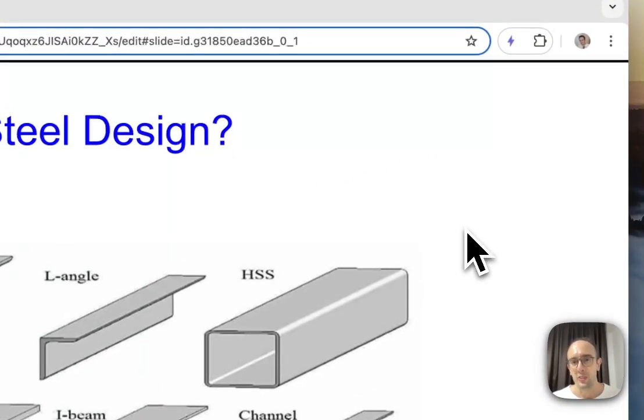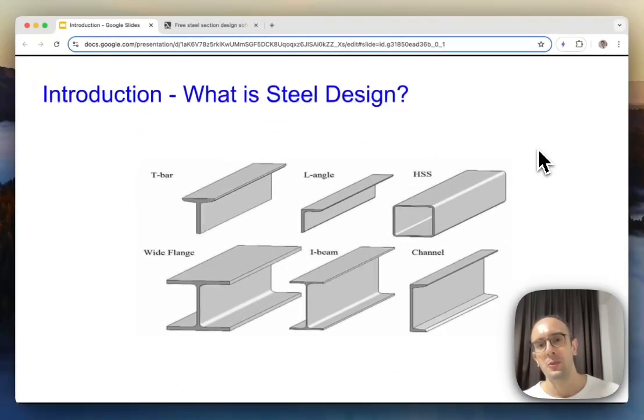So in terms of what is steel design, steel design we use it everywhere in construction. Steel is one of the most commonly used, besides concrete, it's the most commonly used construction material and it can come in a wide variety of shapes, sections and strengths and material properties.